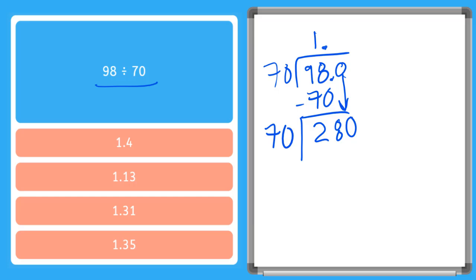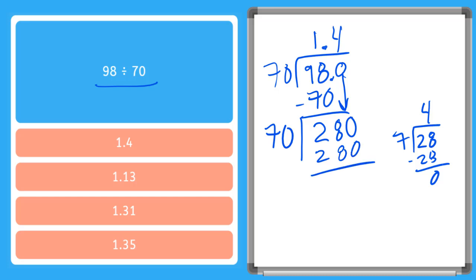Now I'm saying 70 goes into 280 how many times? Those are some big numbers, but notice they both have zeros at the end. So let's do a little side problem — it's basically the same as saying 7 goes into 28 how many times. From your 7 fact family, 7 times 4 is 28. So that's the same as saying 70 goes into 280 four times. I put my 4 up here, 4 times 70 is 280, that gives me 0. My answer is 1.4.